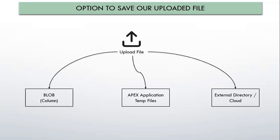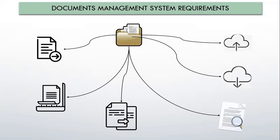If you are working in Oracle Apex, we have three main options available to save our file to build the document management system. The first and most commonly used is a BLOB column type, which we use to save our file in an Oracle database column. The second option, introduced in Oracle Apex, is Apex Application Temp File — a temporary container which holds the file uploaded by the user. The third and last option is you can save your file in an external directory or cloud.